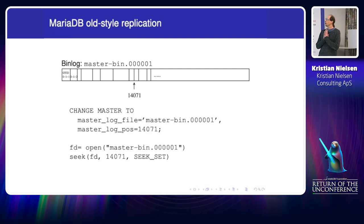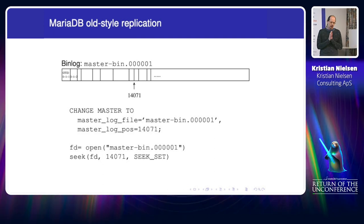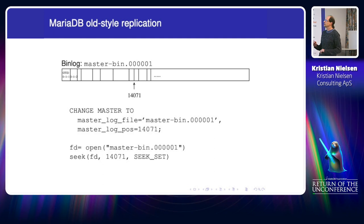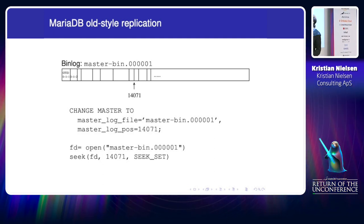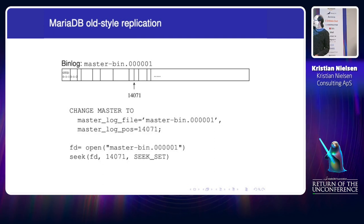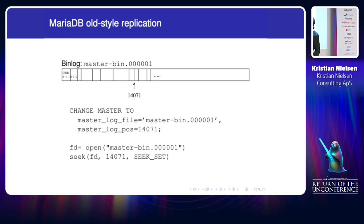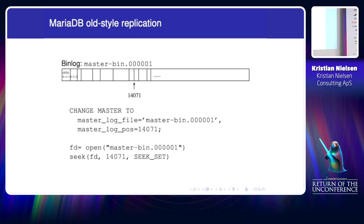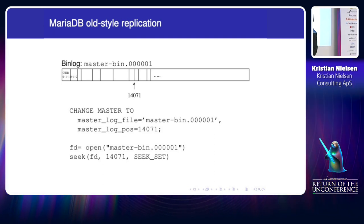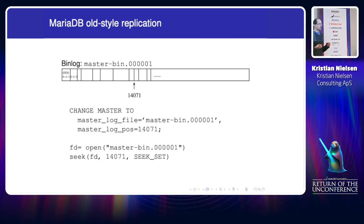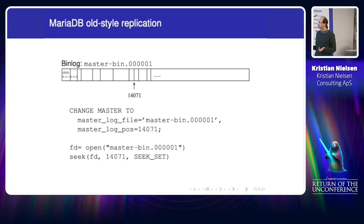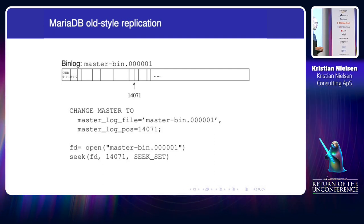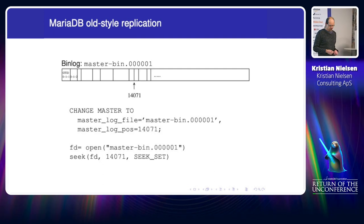The problem is: when the slave connects to the master, how long does it take? Before global transaction ID it was very simple. The binlog consists of different files and the slave would say 'I want to continue replication from this file at this position.' The master opens the file, seeks to the position, and starts sending events — fast and straightforward.